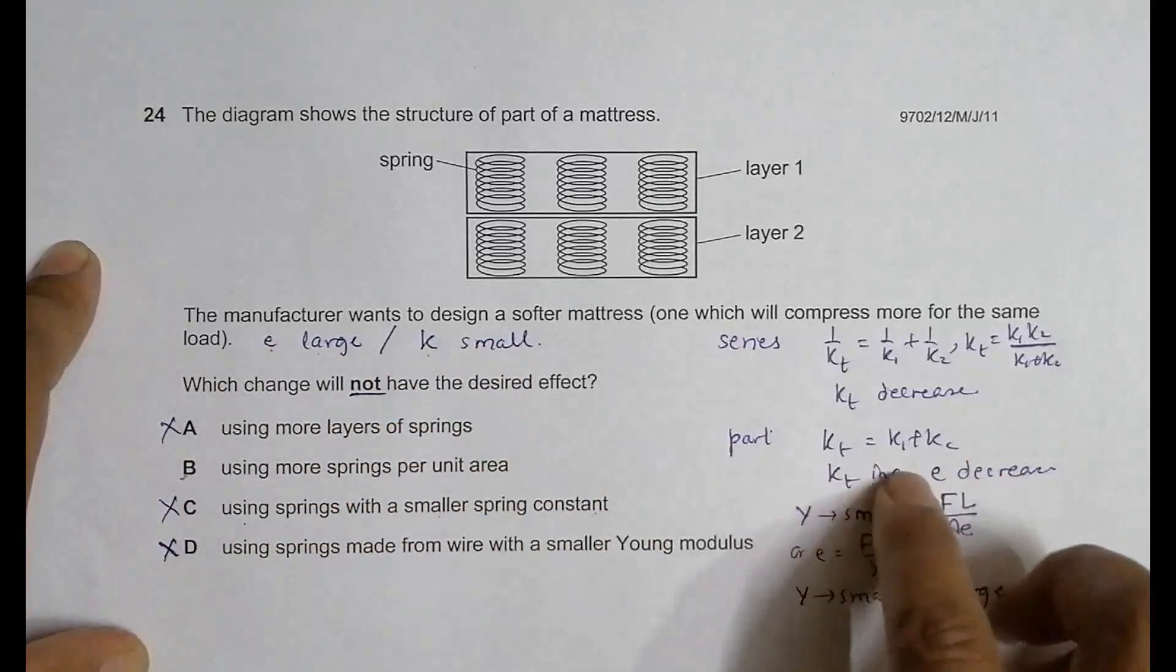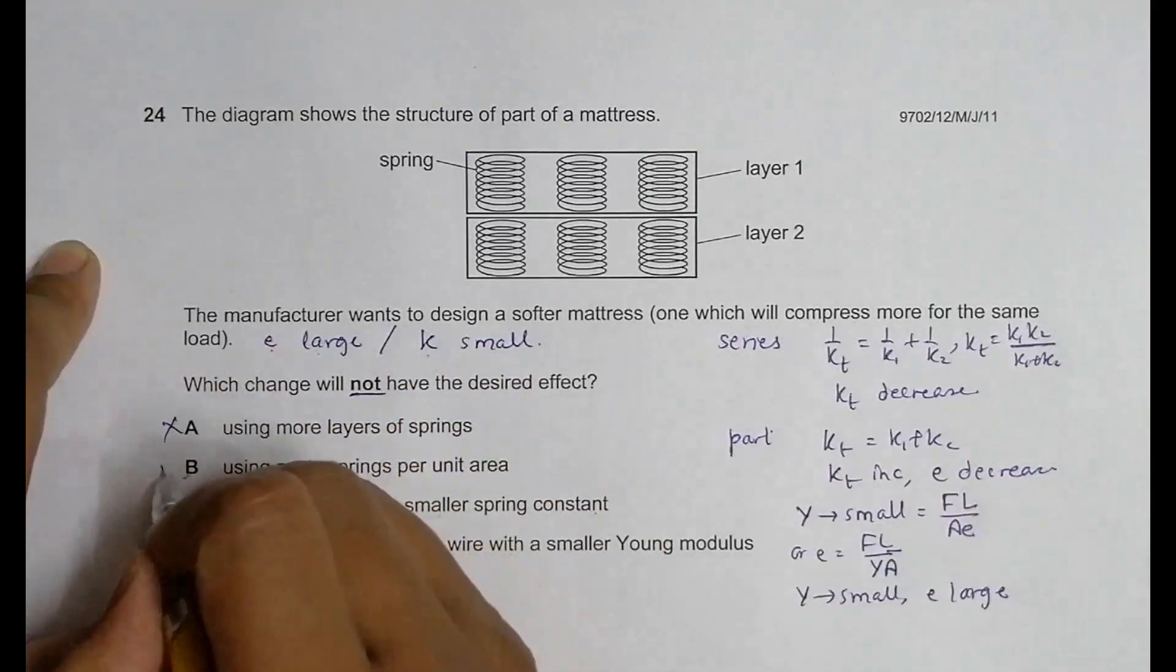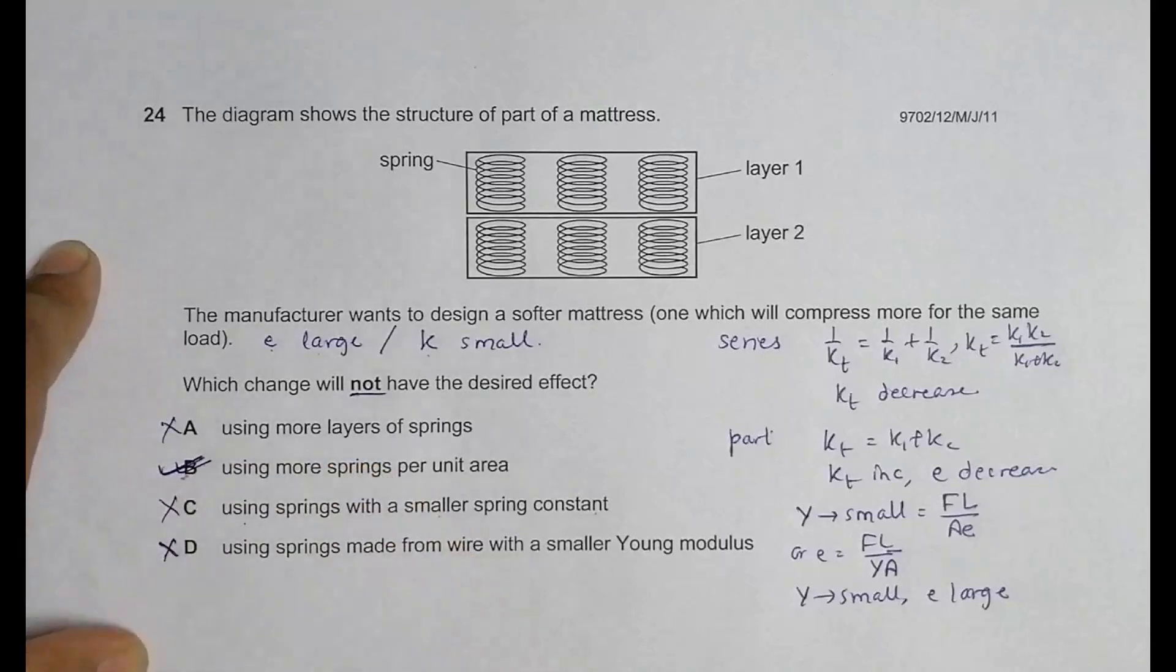Choice B should be the correct answer. When there are questions which tell you about a negative thing, you have to be careful because it often leads to wrong answers. You have to be conscious about the answer choices.